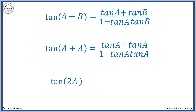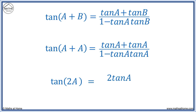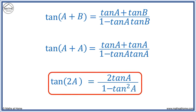We get tan(2a) equals tan(a) plus tan(a), which equals 2·tan(a), all over 1 minus tan(a)·tan(a), which equals tan²(a). This is the double angle formula for tan.